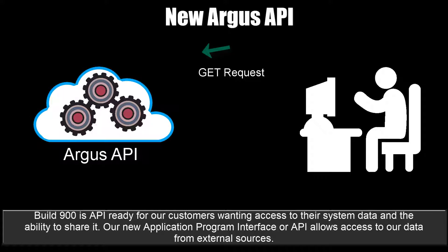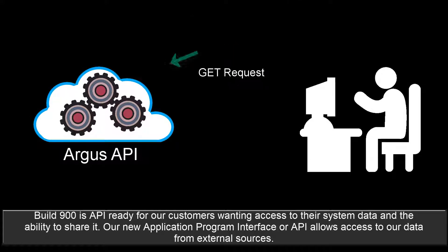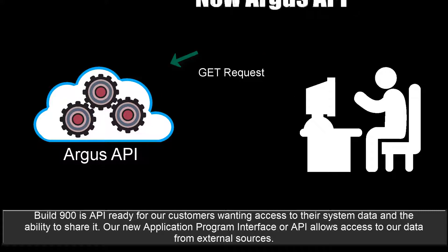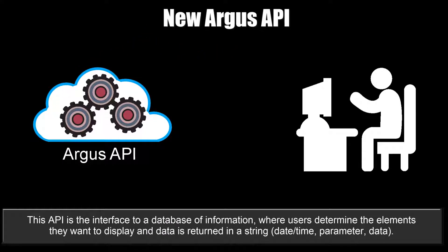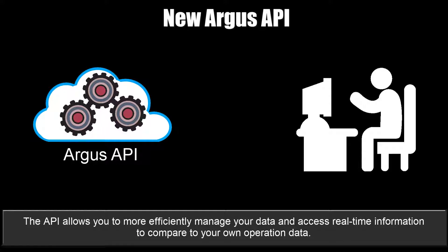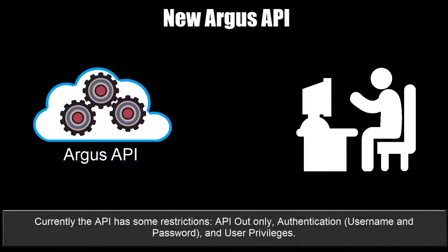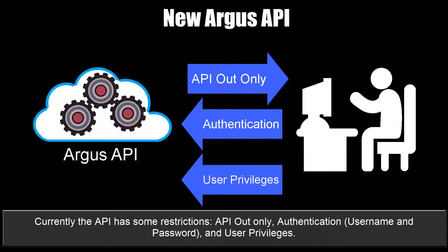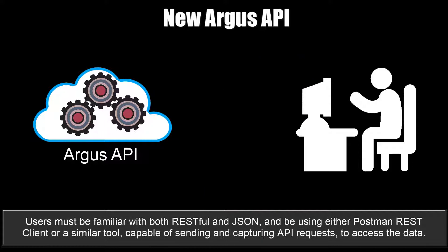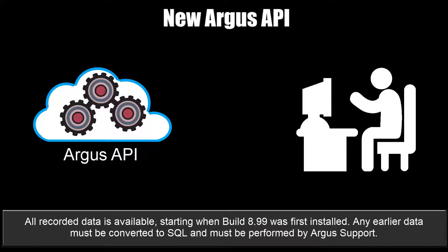Build 900 is API ready for customers wanting access to their system data and the ability to share it. The new application program interface, or API, allows access to data from external sources. This API is the interface to a database of information, where users determine the elements they want to display and data is returned in a string — date, time, parameter, data, and so on. The API allows you to more efficiently manage your data and access real-time information. Currently, the API has some restrictions: it is output only, requires authentication with a username and password, and users must have appropriate privileges. Users must be familiar with RESTful and JSON and be using Postman, REST Client, or a similar tool. All recorded data is available starting when Build 8.99 was first installed; any earlier data must be converted to SQL by Argus support.